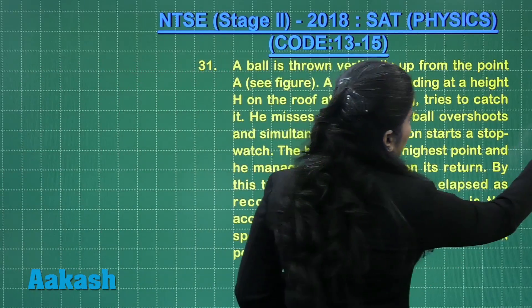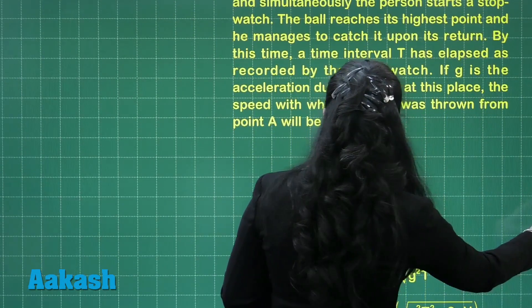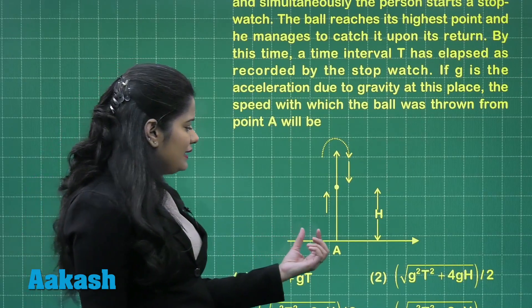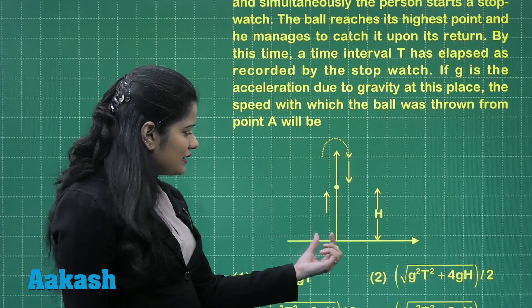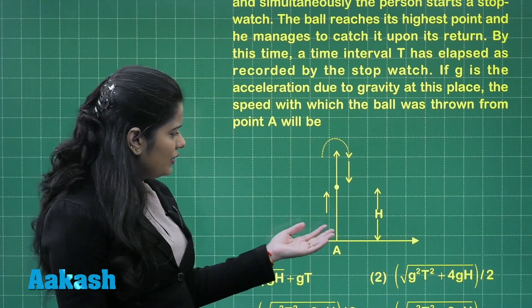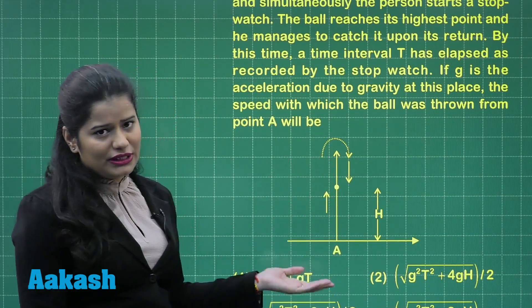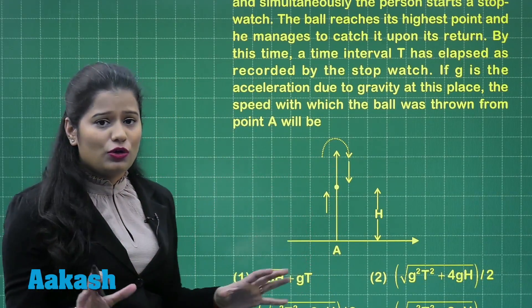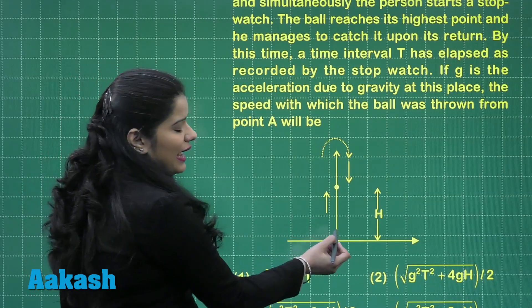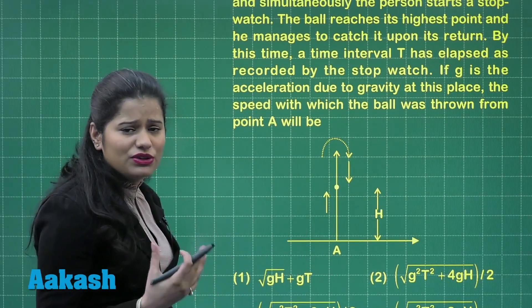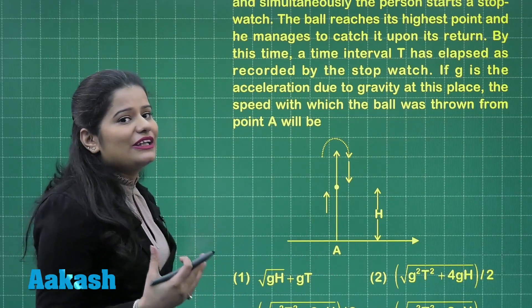See here, you have to have a look at this question. So here you can clearly see that here is the point A from where this ball was thrown in the upward direction. Now, we don't know what was the velocity of ball here at this point A or the velocity with which it was thrown. We need to calculate it.